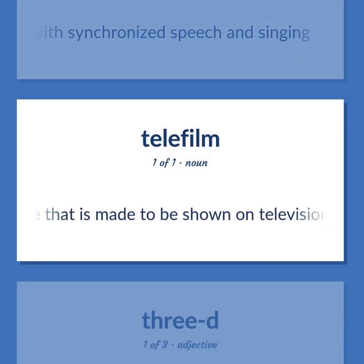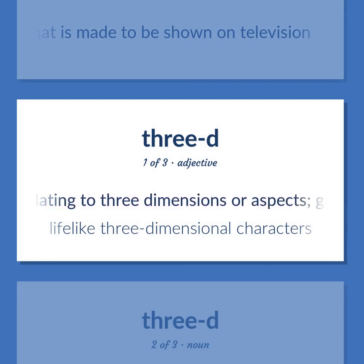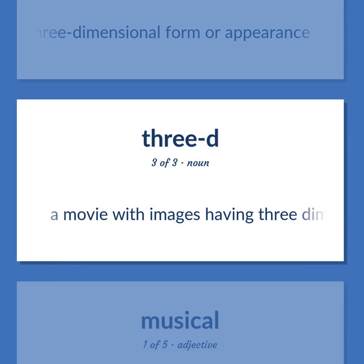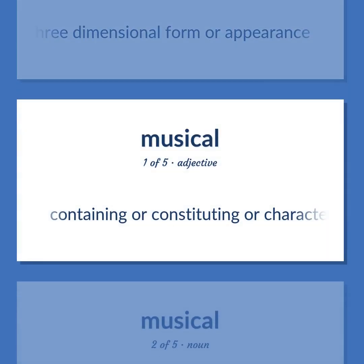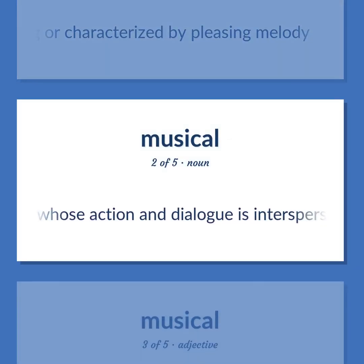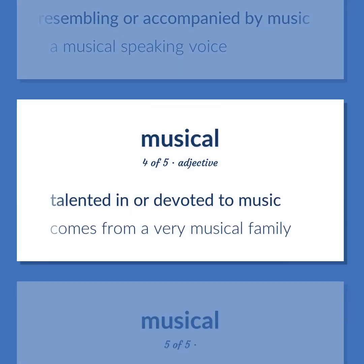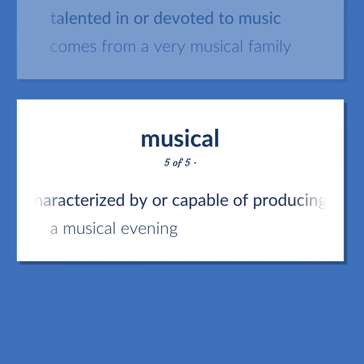A movie that is made to be shown on television. Three-dimensional: Involving or relating to three dimensions or aspects; giving the illusion of depth. Example: Lifelike three-dimensional characters. A movie with images having three-dimensional form or appearance. Musical: Containing or constituting or characterized by pleasing melody. A play or film whose action and dialogue is interspersed with singing and dancing. Characteristic of or resembling or accompanied by music. Example: A musical speaking voice. Talented in or devoted to music. Example: Comes from a very musical family. Characterized by or capable of producing music. Example: A musical evening.